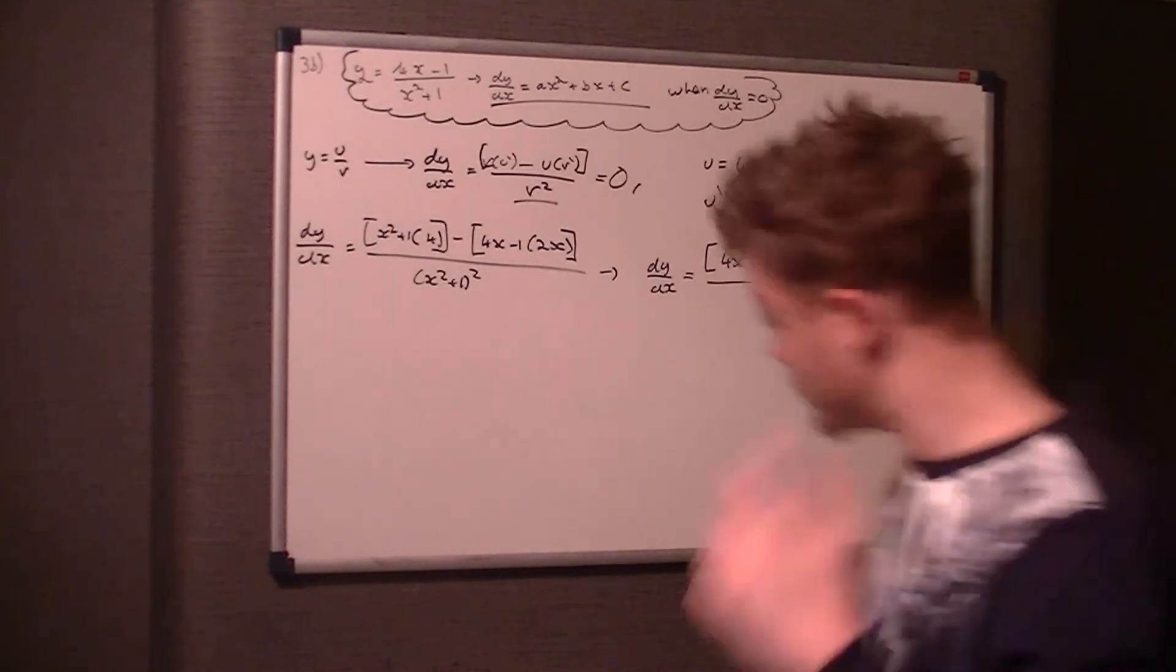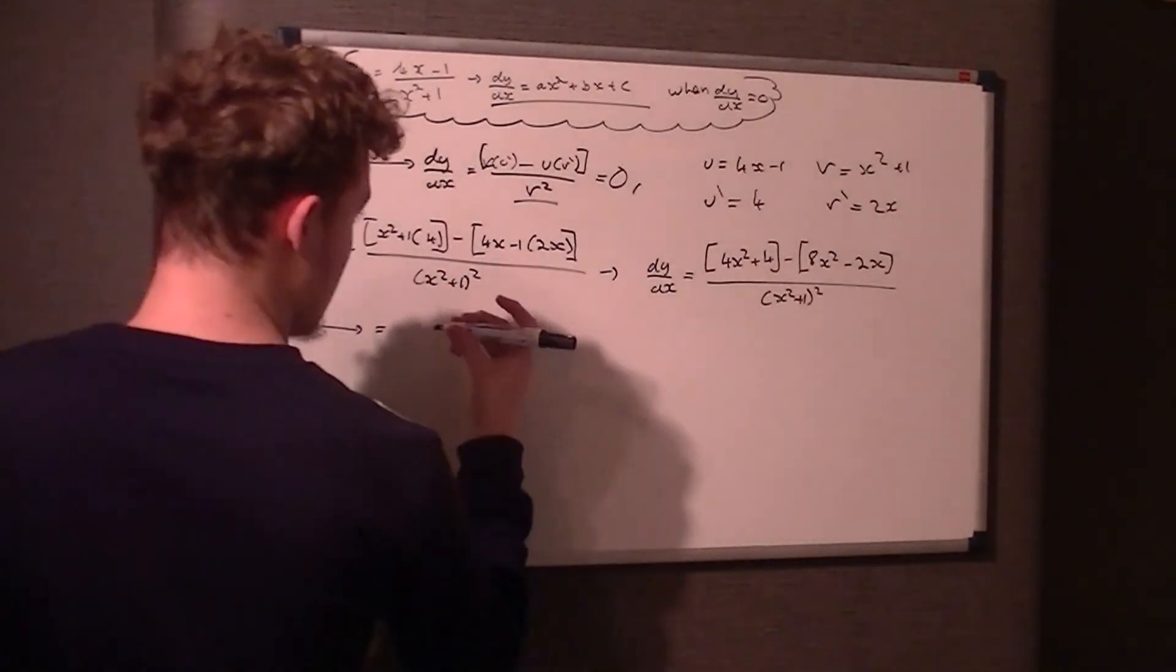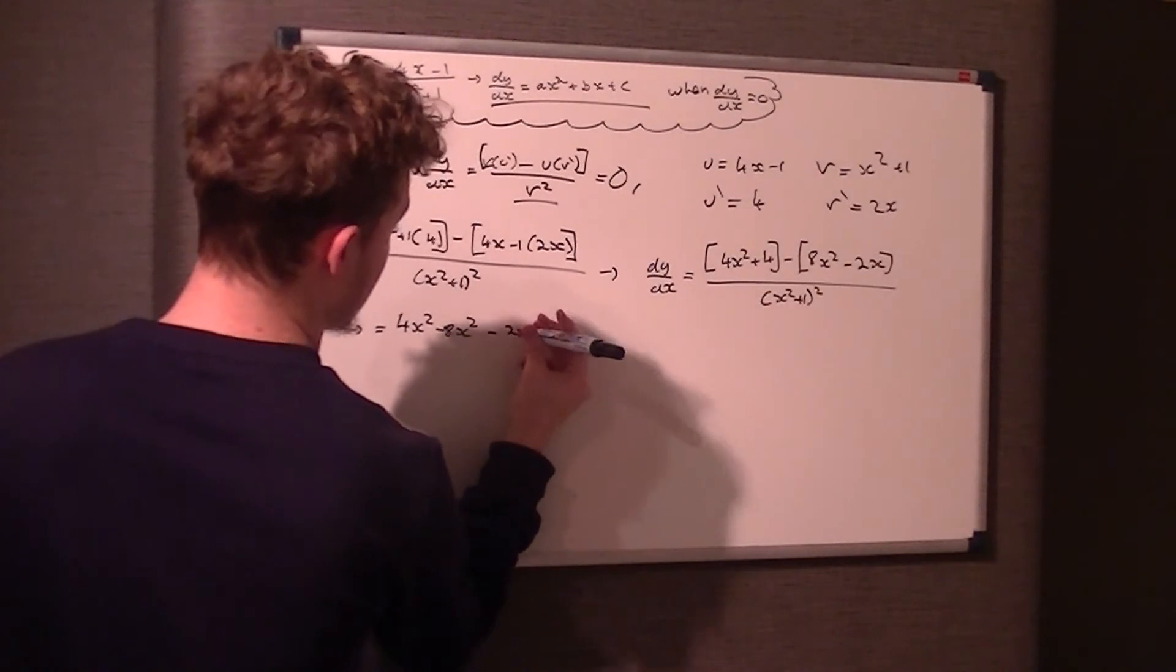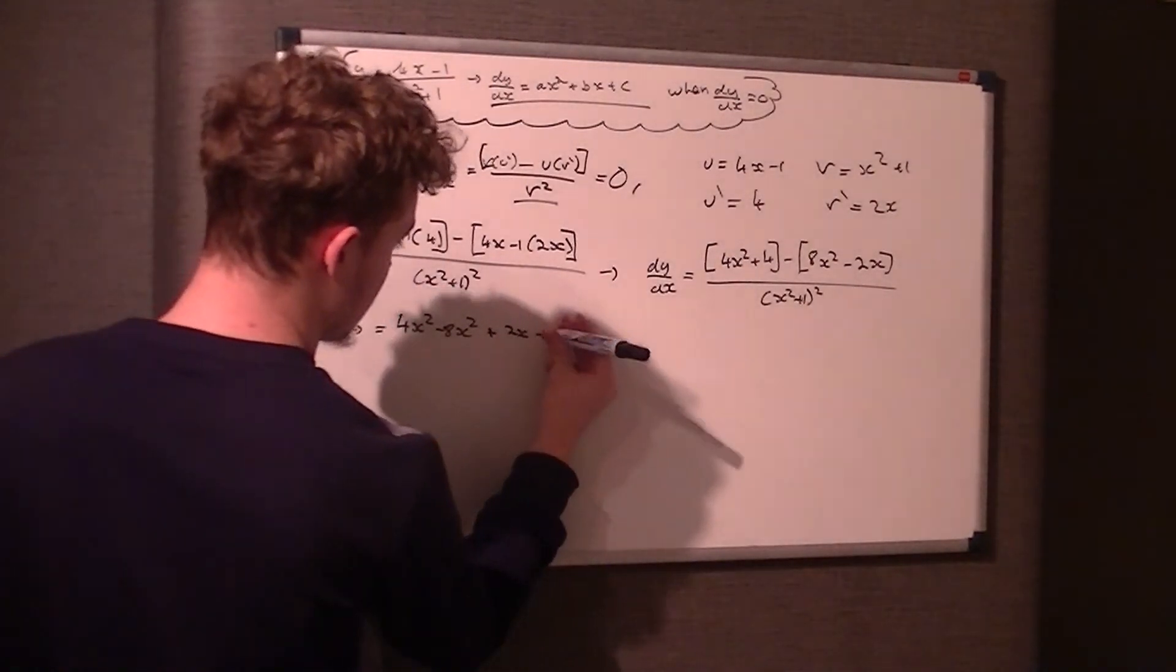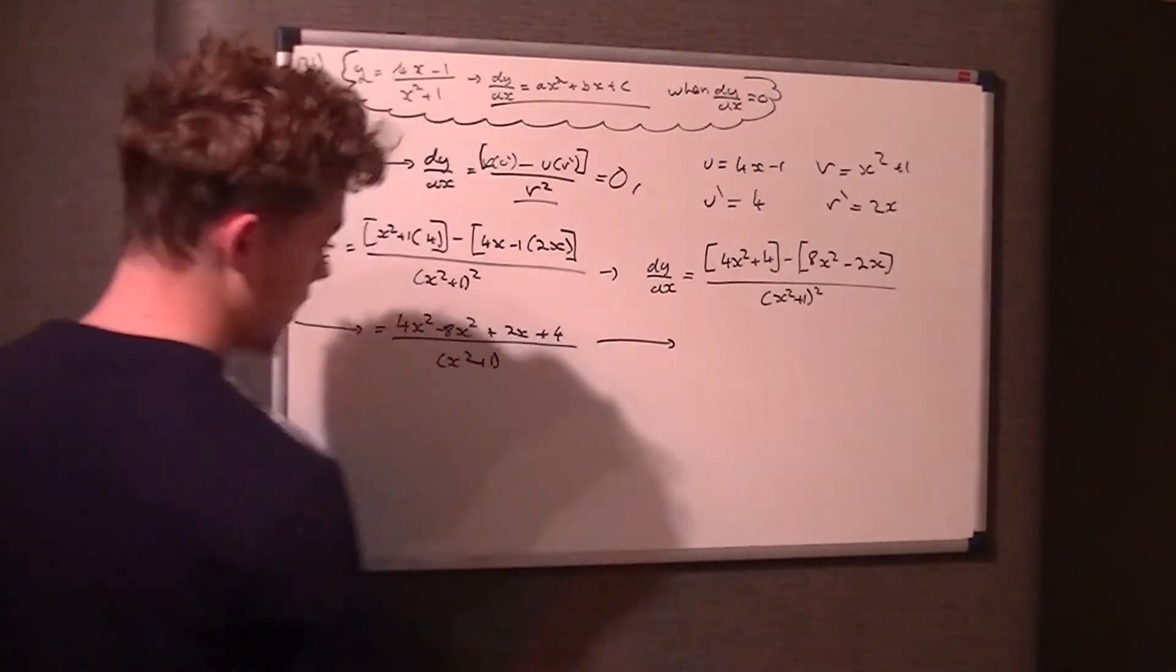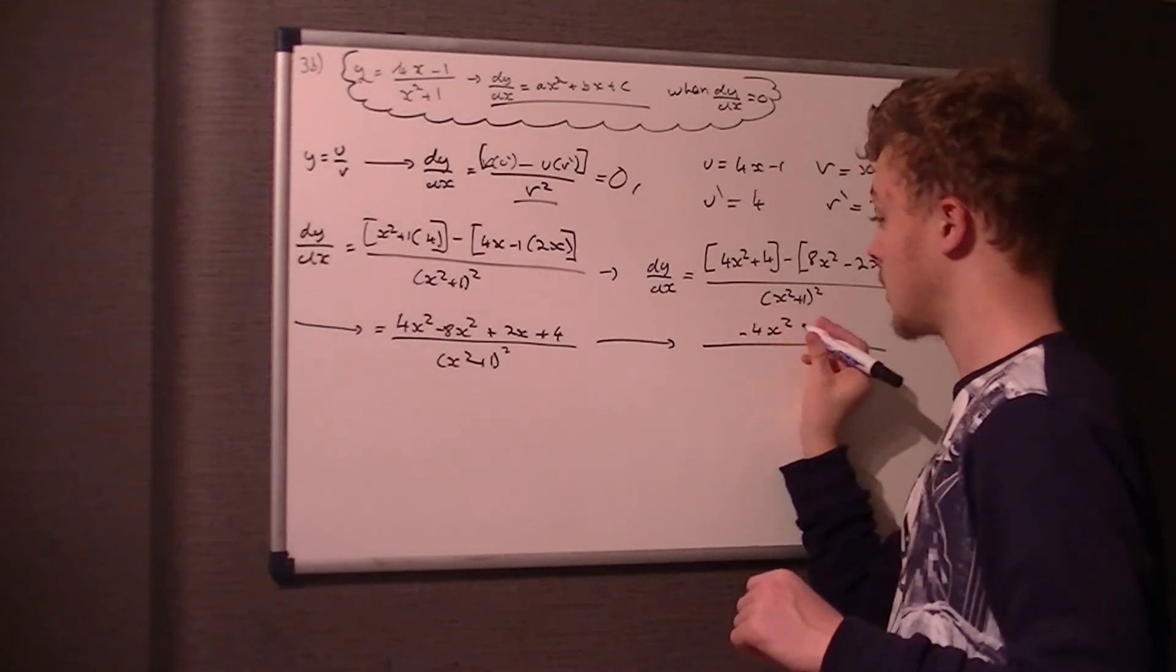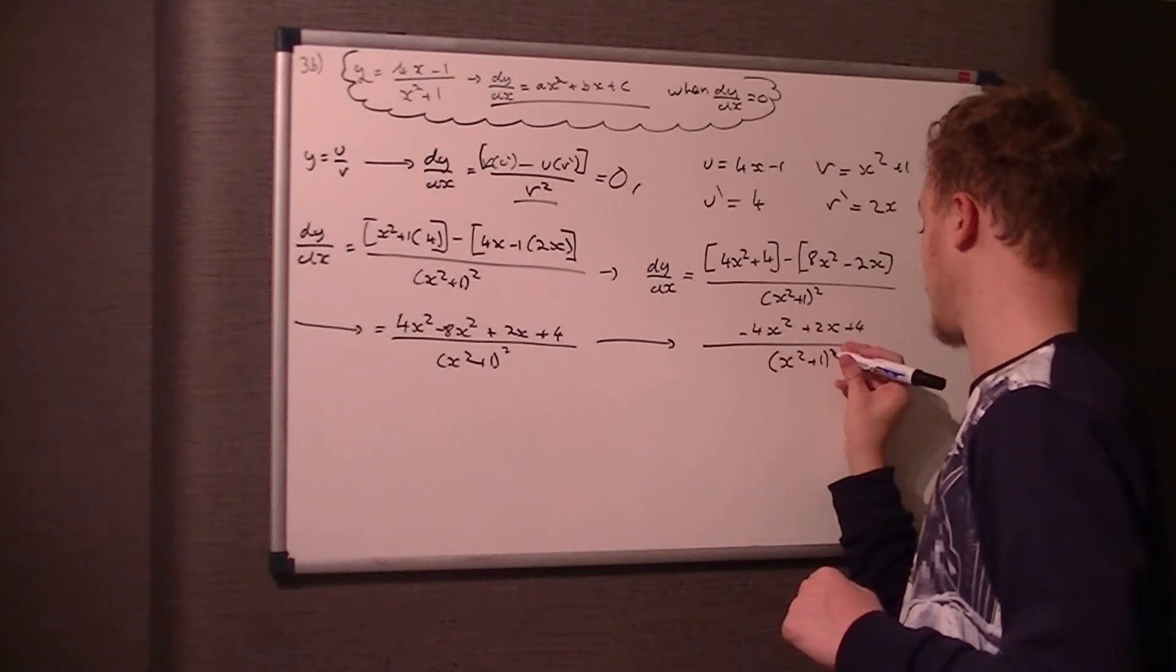We simplify this down on top. That's 4x² take 8x². Because this is take away minus 2x, you're going to add 2x, so take 2x. Nothing takes away 4, so it's just plus 4. So it's going to be -4x² + 2x + 4 over (x² + 1)², and that equals 0.